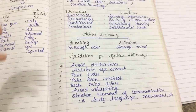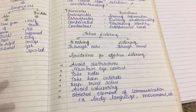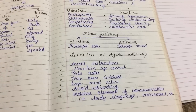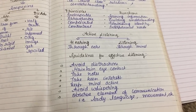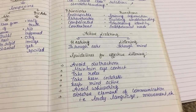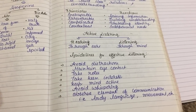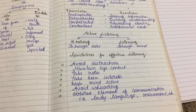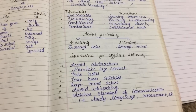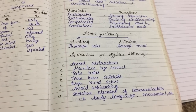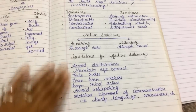The guidelines for effective listening are: first, avoid distractions — if your mobile is vibrating, keep it aside. Second, maintain eye contact with the person communicating to you. Third, take notes whenever needed. Fourth, take keen interest in the topic and keep your mind active — stop daydreaming and distracting yourself. Fifth, avoid whispering or talking to neighbors at the same time. Sixth, observe elements of communication like body language, movements, gestures, and posture.